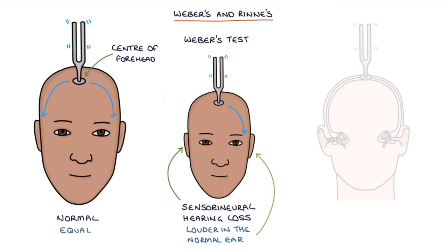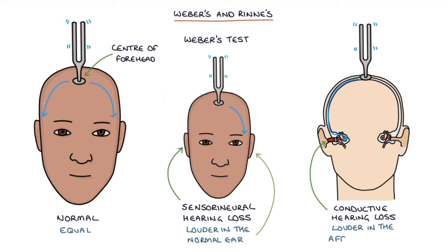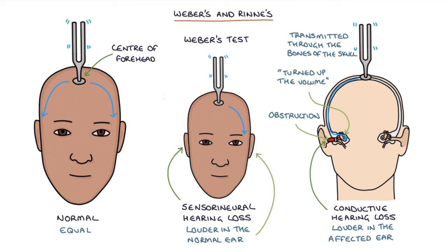In conductive hearing loss, the sound will be louder in the affected ear and quieter in the normal ear. This is because the affected ear has turned up the volume and becomes more sensitive, as sound has not been reaching that side as well due to the obstructive problem. When the tuning fork's vibration is transmitted directly to the cochlea through the bones of the skull, rather than having to travel through the ear canal and middle ear structures, the increased sensitivity in the affected ear makes the sound louder on that side.